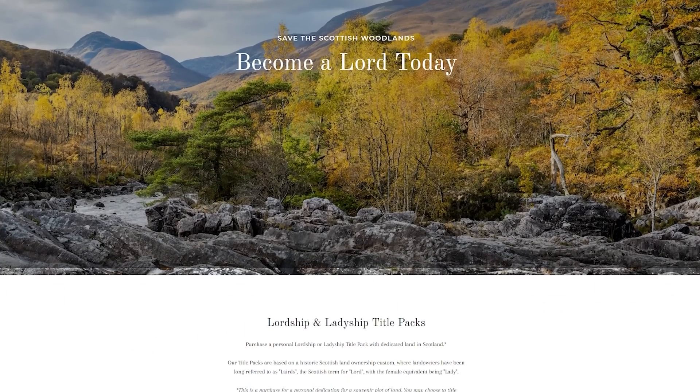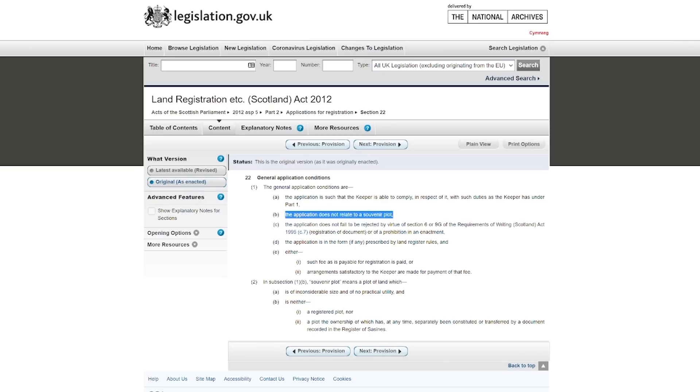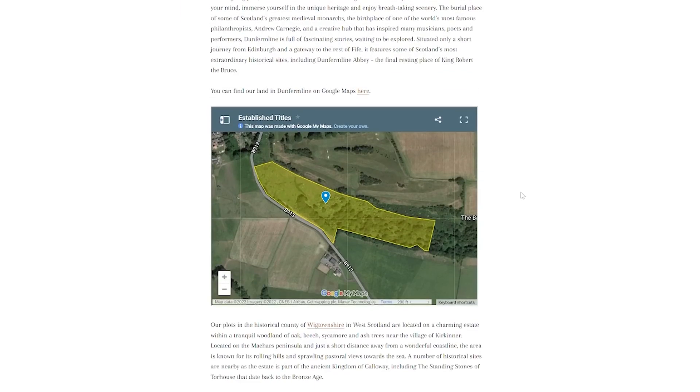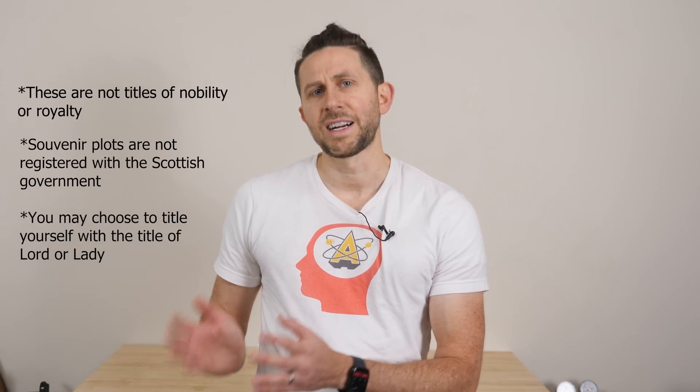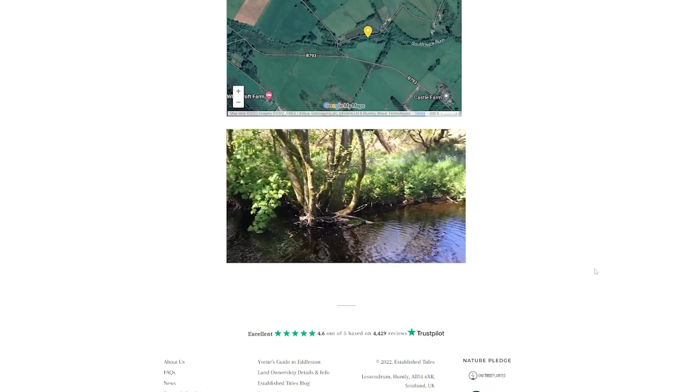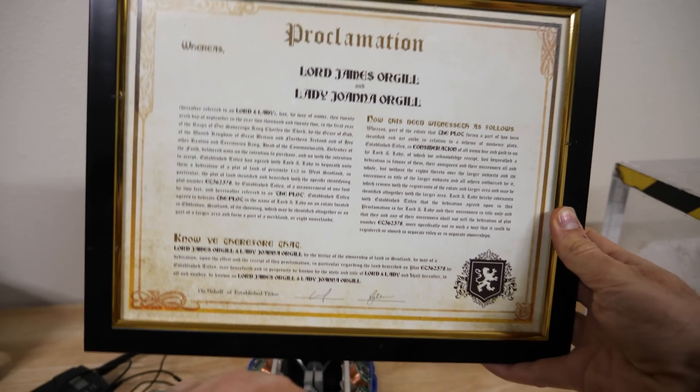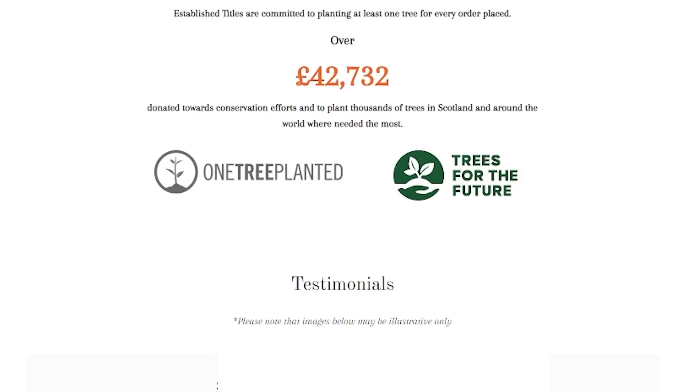And before we end, I'd like to thank the sponsor for this video, Established Titles. Established Titles is a fun and novel way to preserve the natural woodlands of Scotland while helping global reforestation efforts. The land that they assign you is called a souvenir plot. It doesn't have to be a registered plot and can be sold for commemorative purposes or as a souvenir. Since the title Lord is not an official title and since you own the souvenir plot, they refer to their customers as lords and ladies. Their title packs give you at least one square foot of dedicated land on a private estate in Edelston, Scotland, and an official certificate with a crest. Your certificate features a unique plot number with which you can see the exact location of your land. They also plant a tree with every order and work with global charities One Tree Planted and Trees for the Future to support global reforestation efforts.